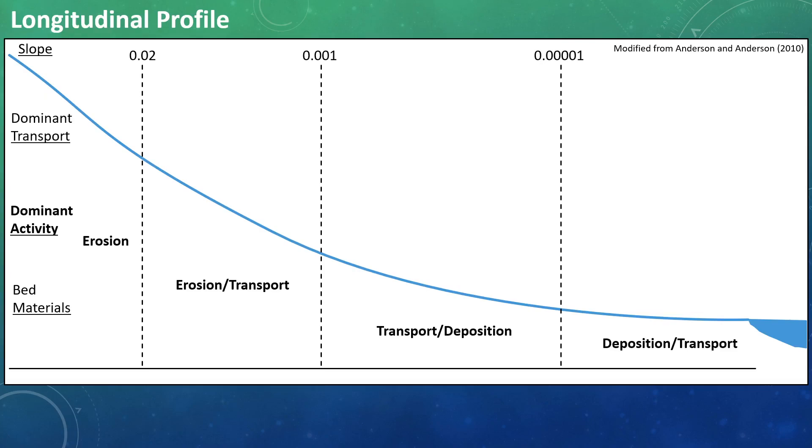Moving downstream, we move into a zone where erosion lessens and transport begins to pick up, with the river beginning to migrate laterally, reworking sediments and transporting it downstream. We then transition into a zone dominated by transport, lateral migration, and now some deposition. The river is trying to move more sediment through the system while also reworking much of the alluvium that it flows through.